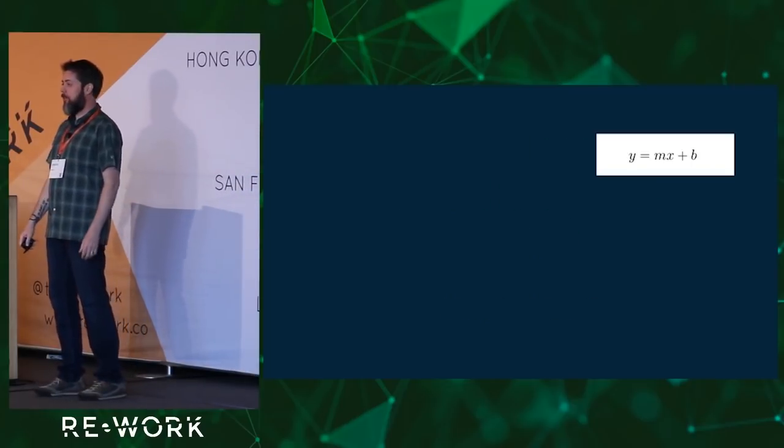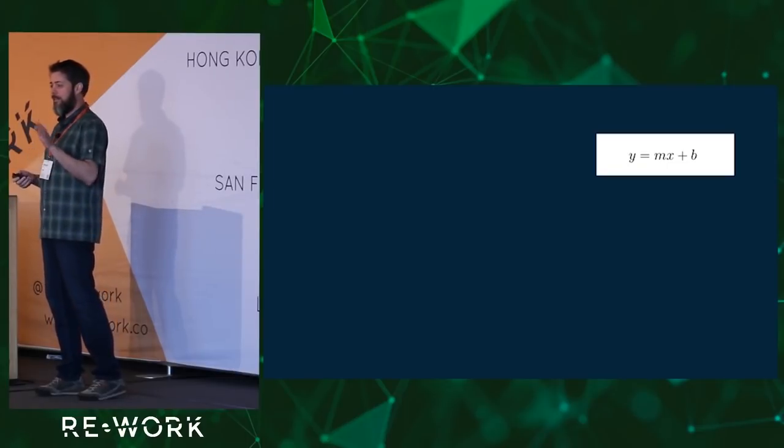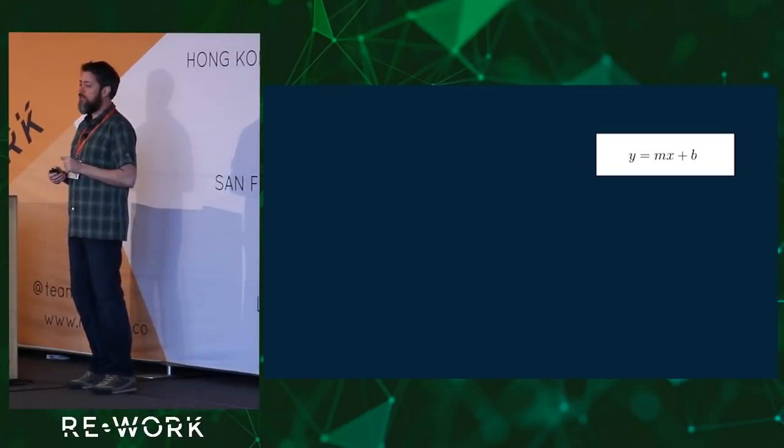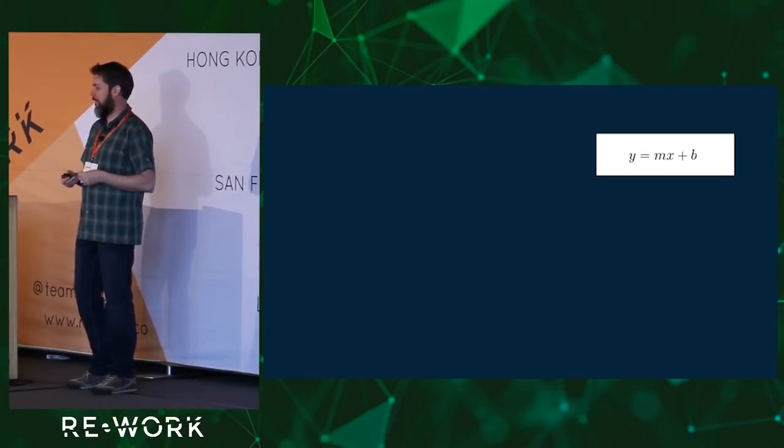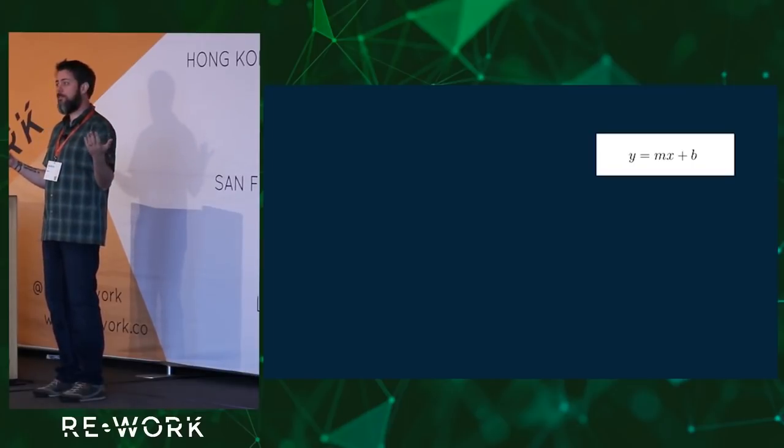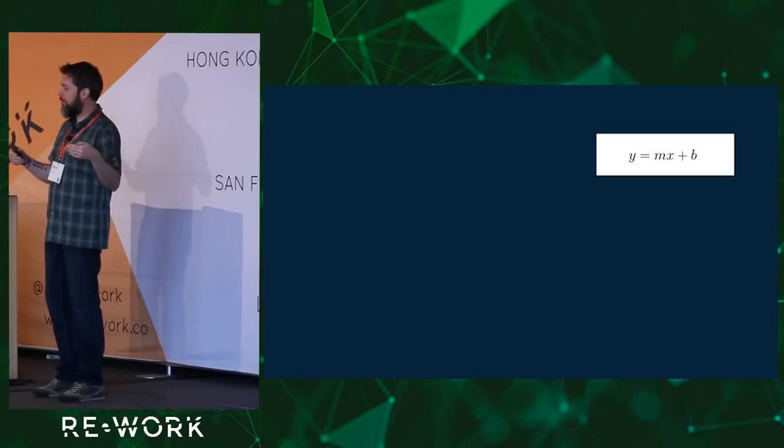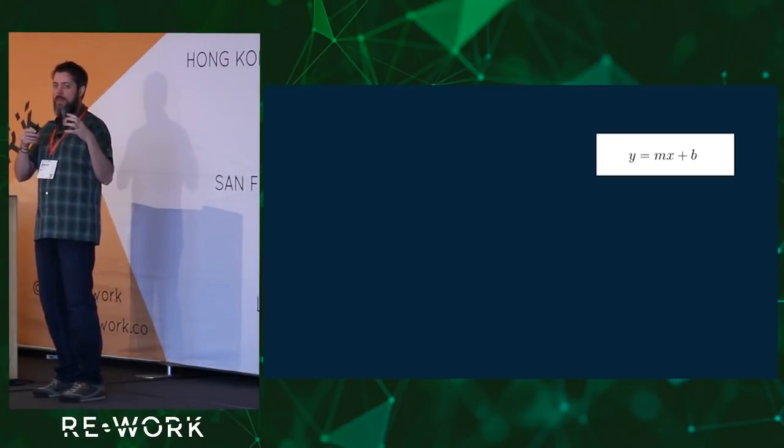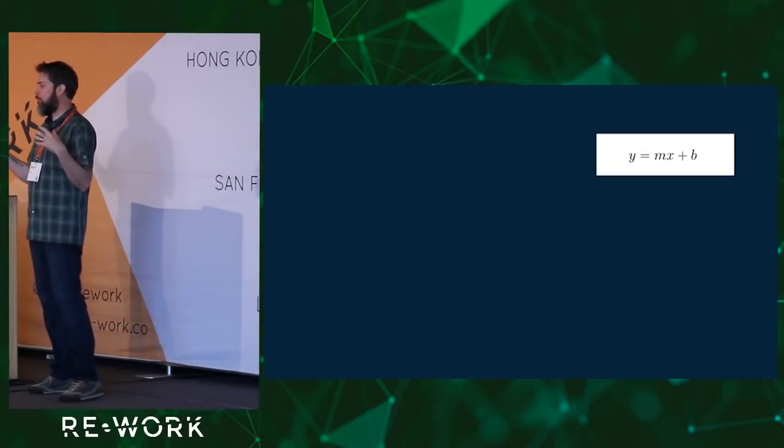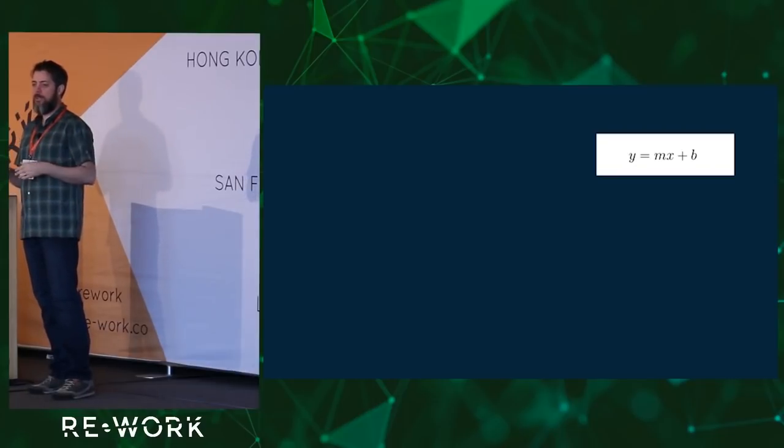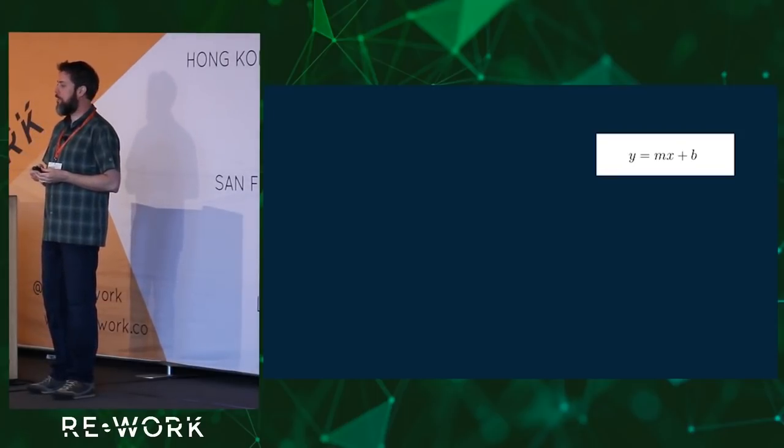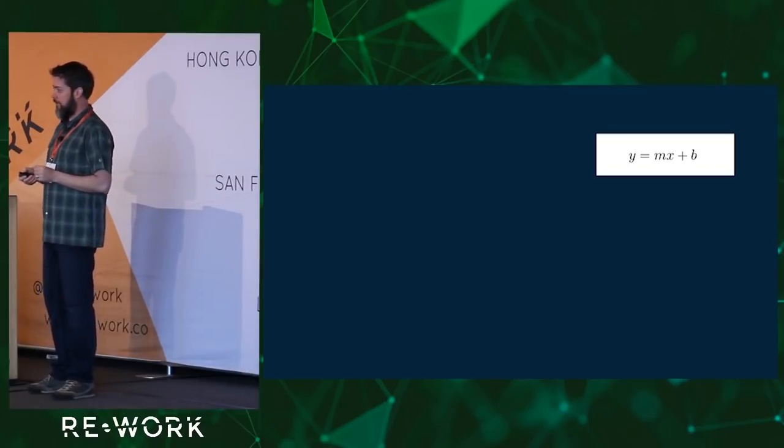So this is the equation of a straight line. And I want to call out a trigger warning for math. There will be equations throughout this presentation. You can safely ignore them and still get the gist of it. Feel free to gloss over it. But it shows the relationship between two things. Perhaps the price that you set on something and the number of those things that you sell. And you take the one thing, the price, and you multiply it by a number, maybe three. You add another number, maybe 12. And then you get the number of things that you sell. This type of relationship is called a simple linear relationship.